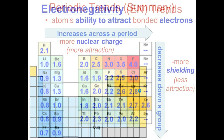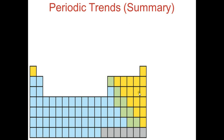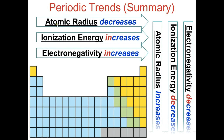Here's a summary of all the periodic trends. Atomic radius decreases as we go from left to right, while ionization energy and electronegativity both increase. Going down a group, atomic radius increases and ionization energy and electronegativity both decrease. Atomic radius decreases left to right because more protons pull electrons in tighter. Ionization energy and electronegativity increase because more protons exert more force on the electrons.